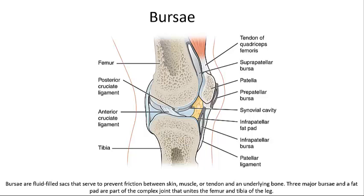A bursa is a small fluid-filled pocket that forms in connective tissue, contains synovial fluid, and is lined by synovial membrane. Bursae often form when a tendon or ligament rubs against other tissue, and are located around most synovial joints — reducing friction and acting as a shock absorber. Fat pads are another accessory structure — localized masses of adipose tissue covered by a layer of synovial membrane, commonly superficial to the joint capsule. Fat pads protect the articular cartilage and act as packing material for the joint.